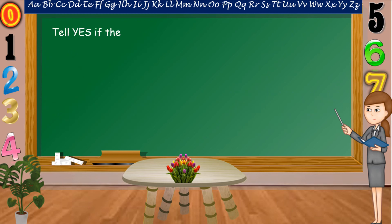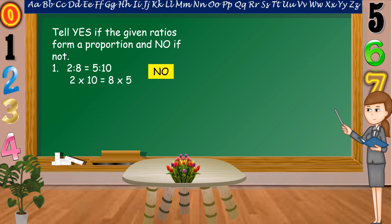Tell YES if the given ratios form a proportion and NO if not. First number, 2 is to 8 as 5 is to 10. Are these two ratios form a proportion? Yes or no? Alright, the answer is no. Why? Because if we are going to multiply the extremes and the means, 2 times 10 equals 20 and 8 times 5 equals 40. So, 20 is not equal to 40. Therefore, these two ratios are not proportion.